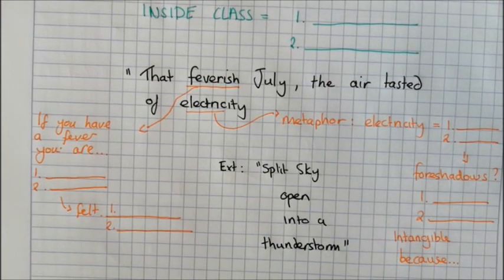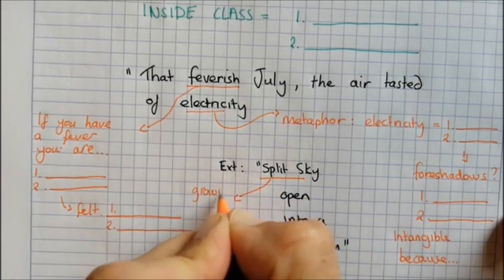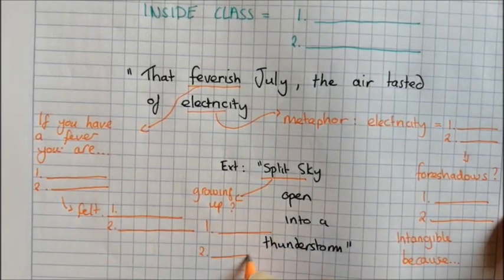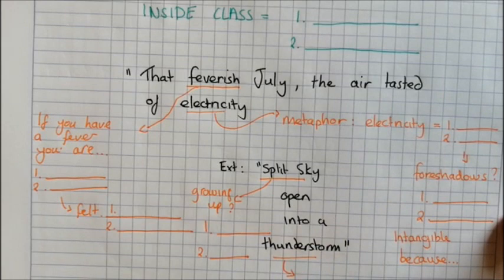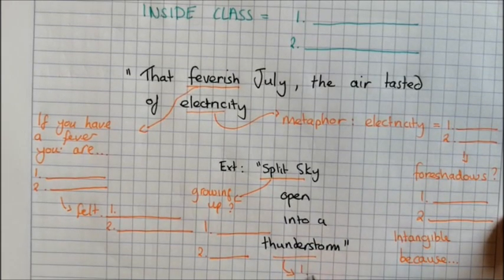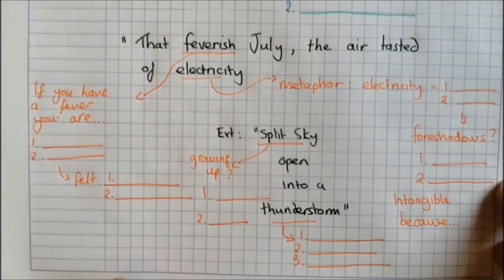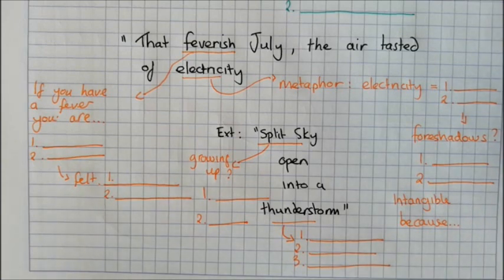Now finally we have this lovely little extension one: we have 'split sky open into a thunderstorm.' I'm going to ask you some really short questions about that, but this is nice, this idea of the split sky. What two things does this show us about growing up? One and two. And then we've got this idea of the thunderstorm. Now list me three pieces of versatile vocabulary that link to the thunderstorm. We've got this idea that childhood innocence now is ephemeral and we'll have a look at that in the next lesson. Great job, follow the next instruction from your teacher.